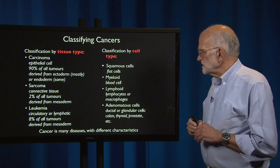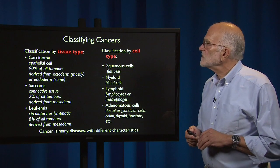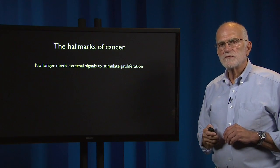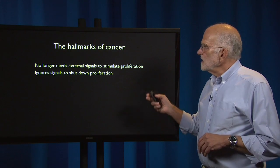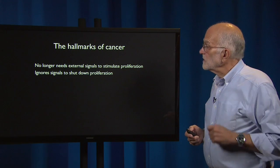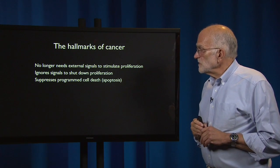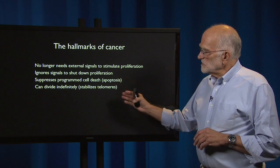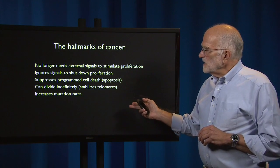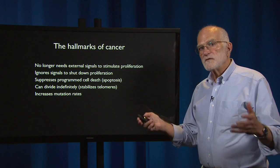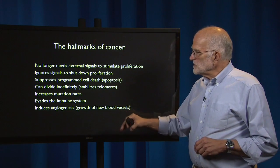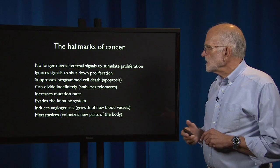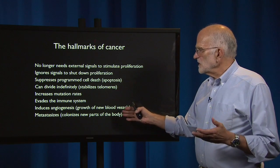Cancer is many different diseases with many different characteristics. What are its hallmarks? Cancer cells no longer need external signals to stimulate their proliferation — they become autonomous. They ignore signals to shut down their proliferation, suppress their own programmed cell death, and will not undergo apoptosis. They can divide indefinitely by stabilizing their telomeres, have increased mutation rates, and become genetically very heterogeneous. They can evade the immune system, induce angiogenesis — that is, the growth of new blood vessels — and metastasize, meaning they can move and colonize new parts of the body.